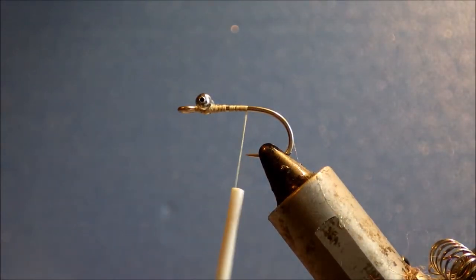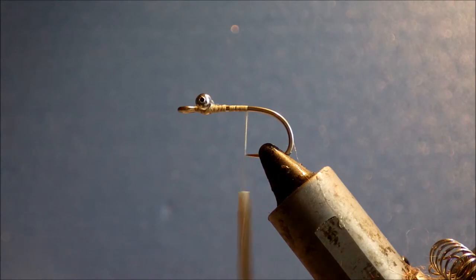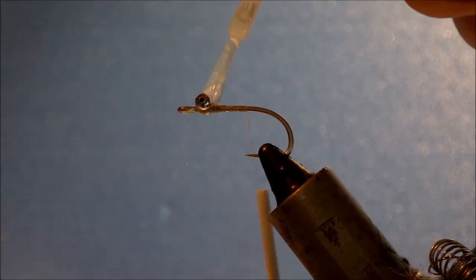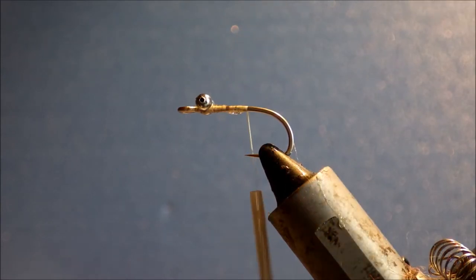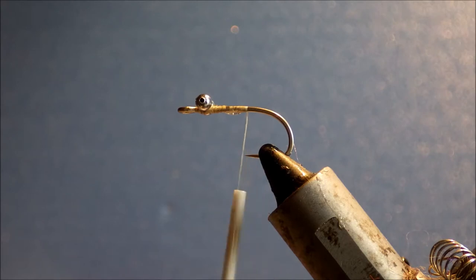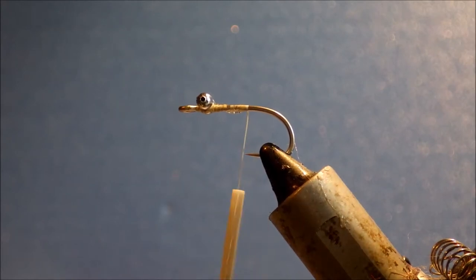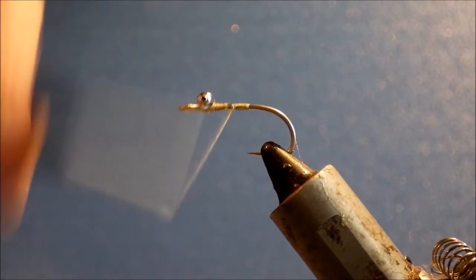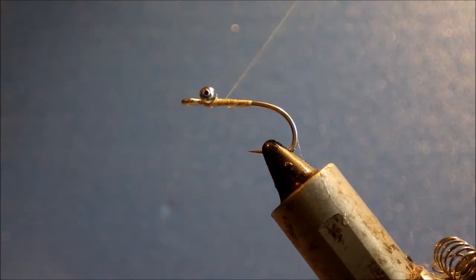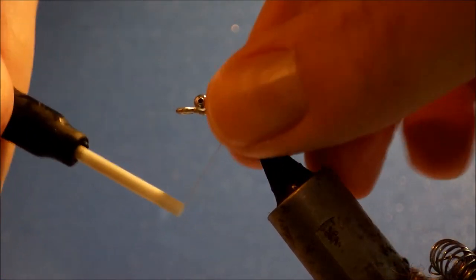So you can see I've already started the hooking device. It's just a size 6 811S and I've attached some medium chain eyes. You could go heavier depending on where you're fishing if you like, but I use this fly in really skinny water so that's why I'm sticking with the light bead chain.